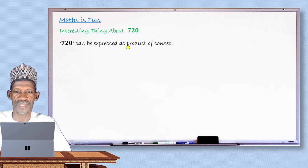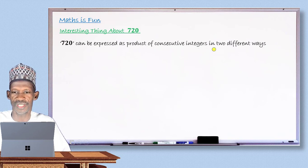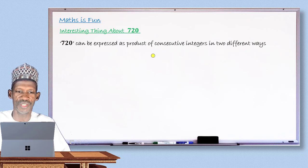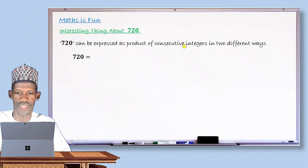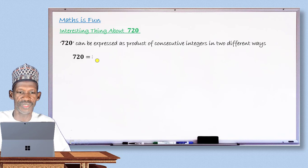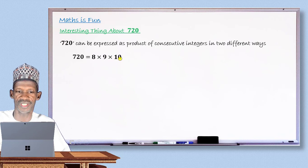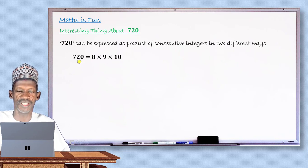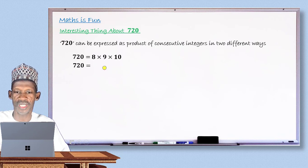720 can be expressed as a product of consecutive integers in two different ways. The first way: 720 equals 8 times 9 times 10. You can see that 8, 9, and 10 are consecutive integers, and multiplying them correctly gives 720.